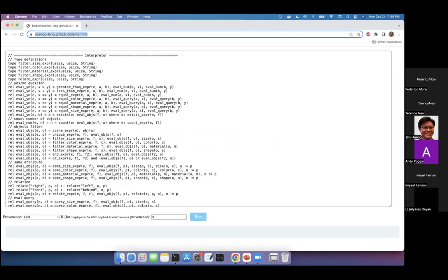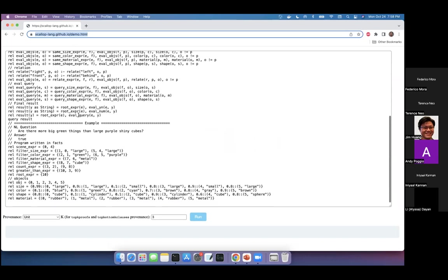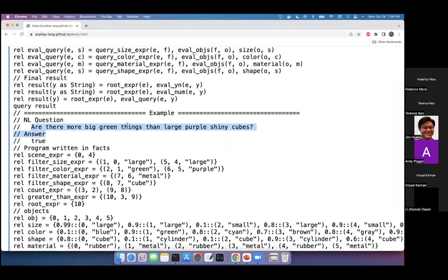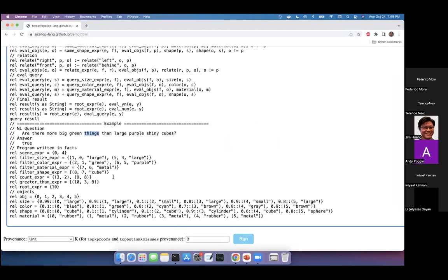I'm very briefly going to show you a brief demo here that you can try on your own. We have a WebAssembly plugin here at this URL. In this case, I have written a simple Scallop program where I'm trying to answer this question: Are there more big green things than large purple shiny cubes?